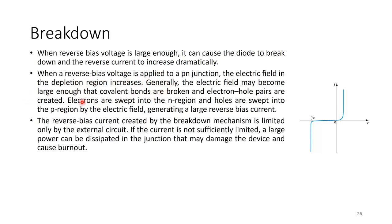The reverse bias current created by the breakdown mechanism is limited only by the external circuit — the value of the current depends on the circuit it is connected to. If the current is not sufficiently limited, large power can be dissipated in the junction, which may damage the device and cause burnout. Operating in breakdown is not necessarily damage — sometimes it is intentional — but without a limiting circuit, you will damage the device.